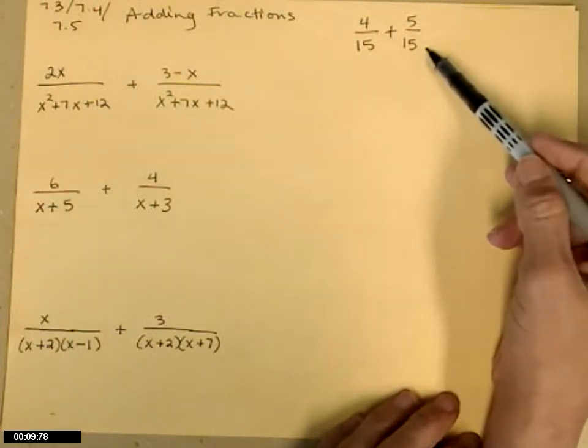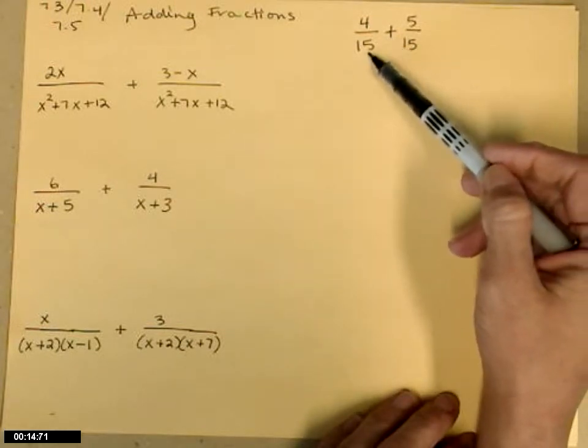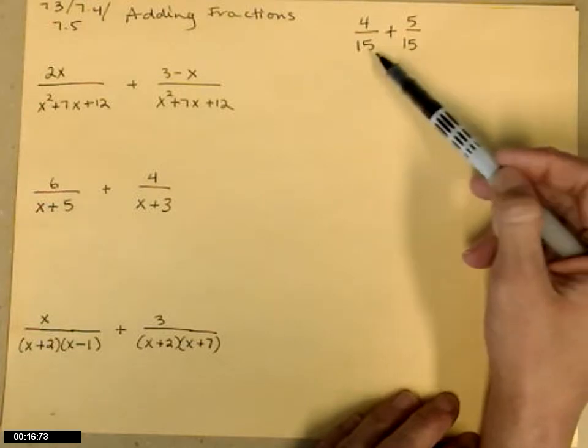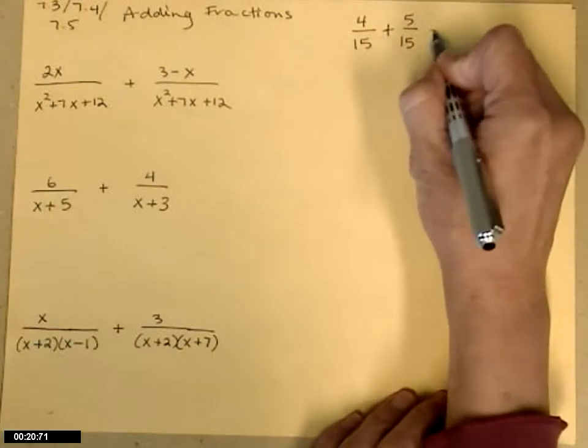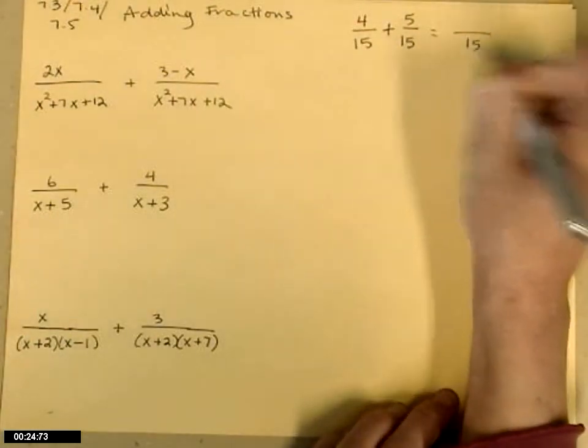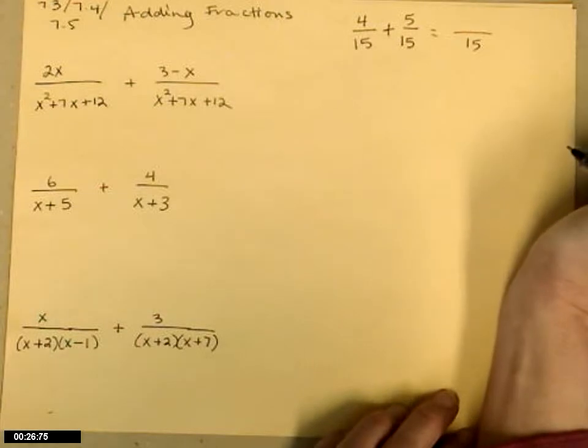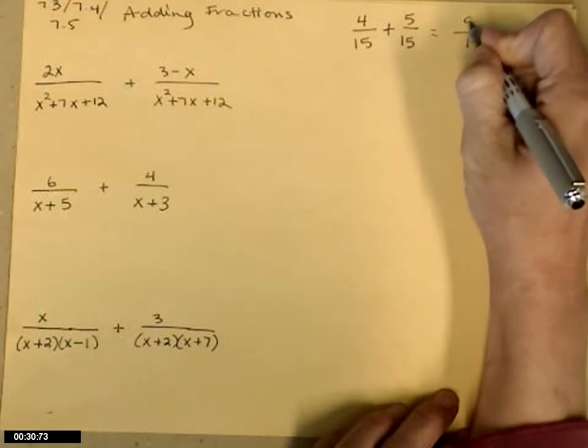Don't reduce the 5 fifteenths because, as you remember, when you add fractions or subtract fractions, you need to have a common denominator. The denominators need to be exactly the same in order to add the two fractions. Your answer is going to have that same common denominator, in this case 15, and then you add the numerators. 4 plus 5 is 9.